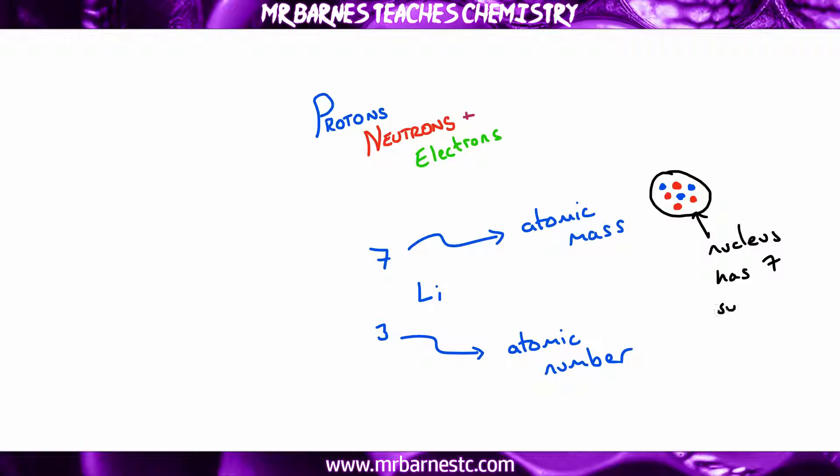So this top large number, the atomic mass, that is the number of subatomic particles in the nucleus of the atom. You should remember that the nucleus of the atom contains protons and neutrons, therefore I know I have 7 protons and neutrons combined.